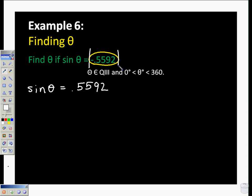And so in order to find theta hat, which is associated with this sine up here, we're going to do the inverse sine of 0.5592. That's going to give us 34 degrees.